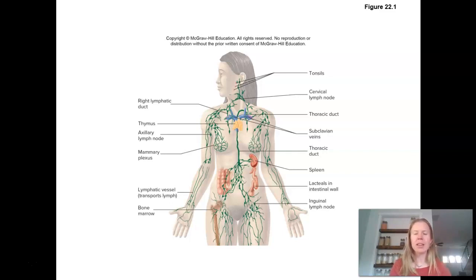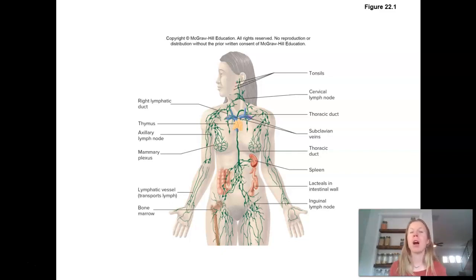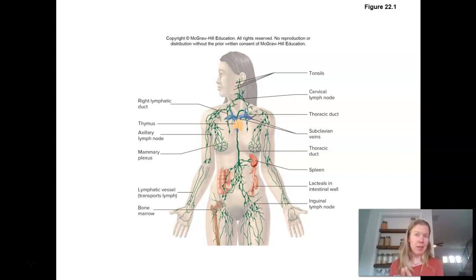One of the big things the lymphatic system also does is maintaining fluid balance in the body. It's going to return some of those interstitial fluids we talked about with blood vessels. As fluid was filtered out of the capillaries, quite a bit was reabsorbed, but not all of it. The lymphatic system returns that fluid to the cardiovascular system. We carry a fluid in this system called lymph — it's just a plasma-like fluid.